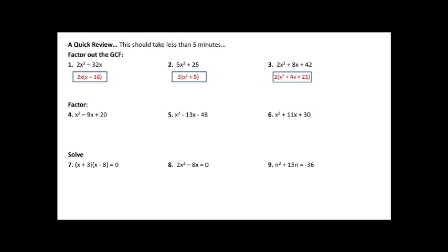The next section on factoring: x squared minus 9x plus 20 was discussed in our last lesson. We want to split it into two binomials, knowing x squared must be x times x. To get a positive 20 at the end, I need either two positives or two negatives, and the middle sign tells me which — so I'll use negative signs in both. To get 20, I can multiply 10 times 2, 20 times 1, or 4 times 5. The only pair that adds up to 9 is 4 and 5.